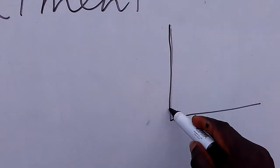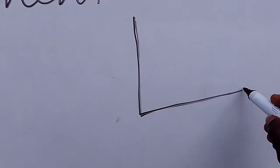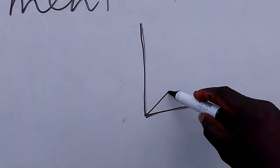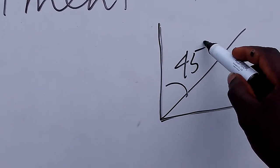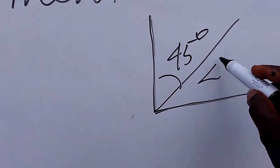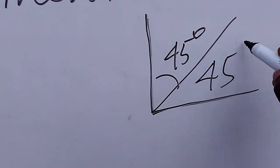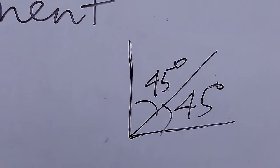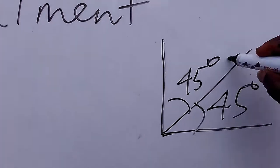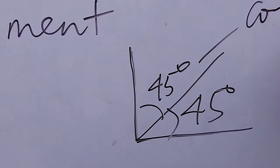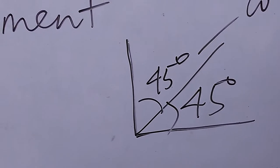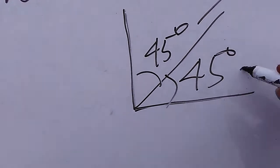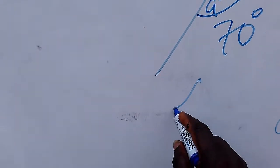Complementary angles combine to form the right angle — that is 90 degrees. We can say this is 45 degrees and this is 45 degrees. So these two angles are complementary angles.